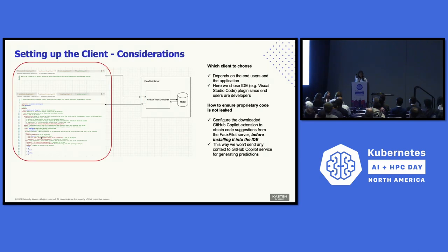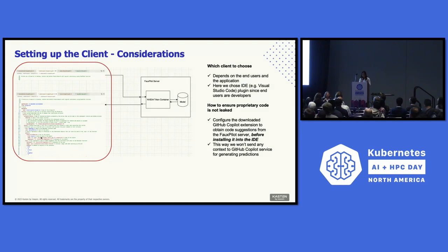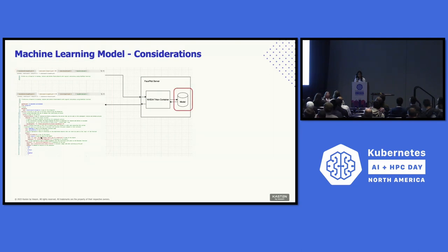The next step was to set up the client itself, and the obvious question is which client to choose. This depends on the end users and the application — in my case, I chose an IDE because the users are developers. Another very important question is how to ensure proprietary code is not leaked in the process. I downloaded the GitHub Copilot extension and configured it to point to my local server — hosted on the cloud — before even installing it into the IDE, so that it doesn't consume our code base.